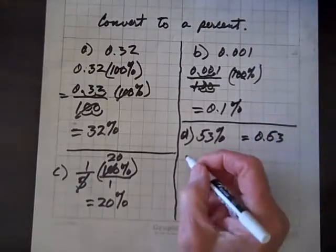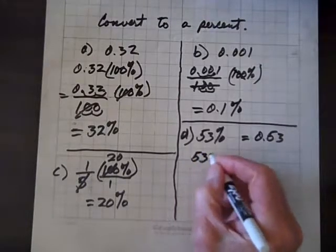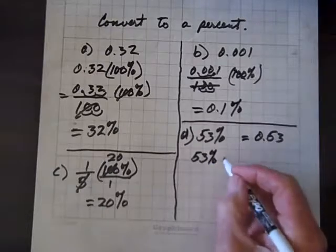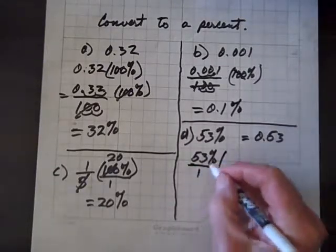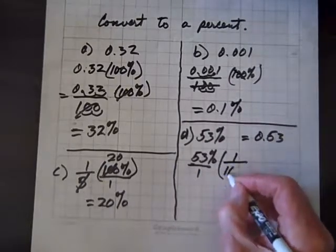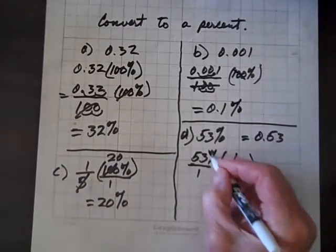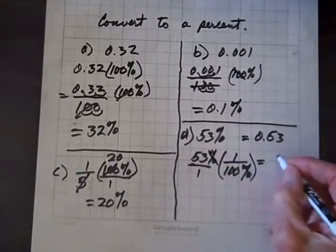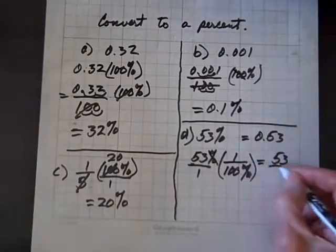But here's why. If we have 53%, I'll multiply by 1 in the form of, by the way, there's 1 down here, it's understood, 1 over 100%. Now, the percent symbols disappear, and we have 53, they divide it out, over 100.